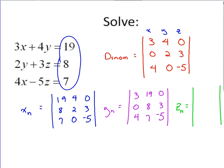And for z, well, we're going to take the z column out, replace that with 19, 8, and 7. And then our other two columns will stay the same.